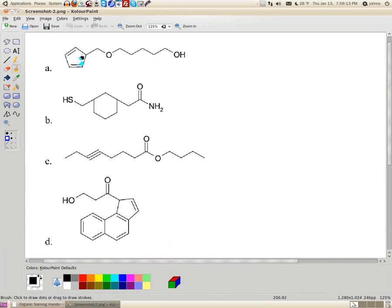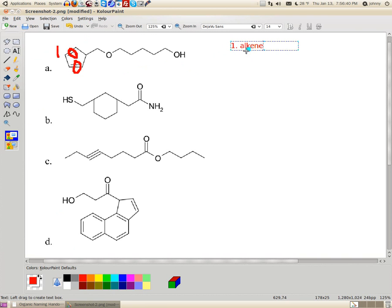Alright, let's start with the most obvious one. First of all, I guess I need to change my color. Here's our first functional group. These are double bonds. So this is my number one. On this one, for A, number one. Remember, single bonds is alkane, double bonds is alkene. So this is an alkene.